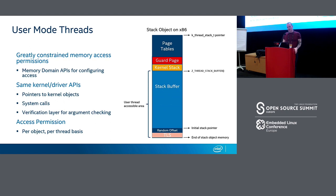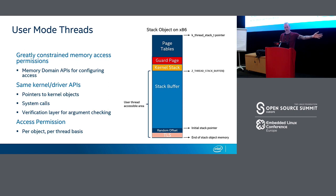When you create a thread in user mode, by default the only memory it can access is its own stack buffer for read/write, and program text and read-only memory for read and execute. Any other memory range it needs access to must be granted through a memory domain. Similarly, a new user thread by default only has access to its own thread object, so if it tries to make a call to a device driver it will get a fatal error. All interaction with device drivers and kernel objects is done through system calls.